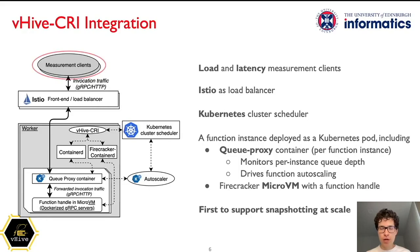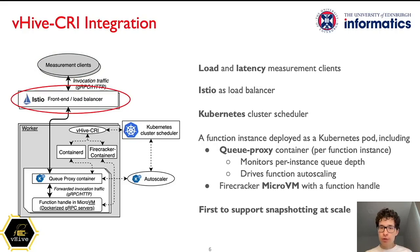At a high level, the VHive architecture is similar to AWS Lambda. Since VHive's main goal is benchmarking, it includes a number of load and latency measurement clients that drive the function invocation traffic and report various metrics. The invocations are gRPC or HTTP requests that first arrive at the front-end load balancing service Istio, selected based on its popularity for data center applications. Then the invocation traffic is forwarded to workers that host function instances.